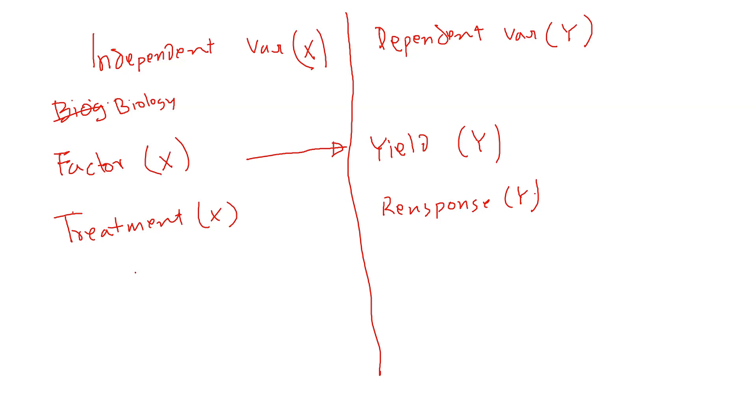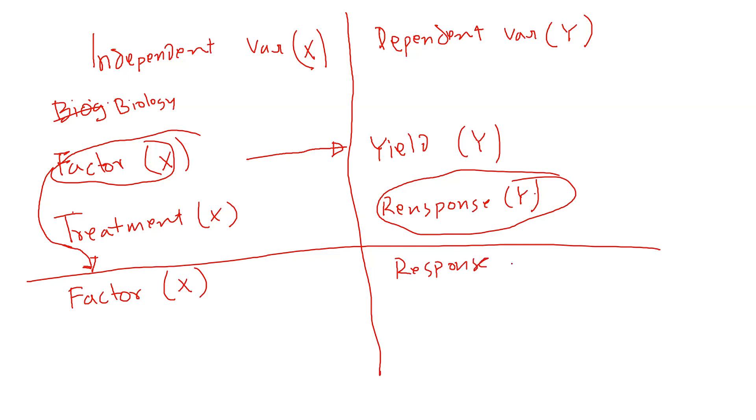When engineers started to use design of experiments after the biology field and then medical field, they didn't really change anything. They basically use factor as their X variable, and response is the most common Y variable. So basically in design of experiments, most books use factor as the X variable and response as the Y variable.